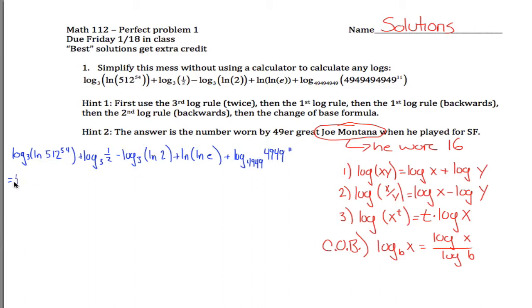So I can rewrite this first one as 54 times the log base 3 of the natural log of 512. Nope, that's not true. Careful. Don't make the mistake I just made. So it's just the 512 being raised up to the 54th power. So really, it's only the thing that I'm taking the natural log of that's raised up to the 54th power. So this log rule says that you can only move the power of the thing you're taking the log of down in front of that log. So actually, what I need to do is this is log base 3 of rewrite this inside part using this rule. So it's 54 times the natural log of 512.